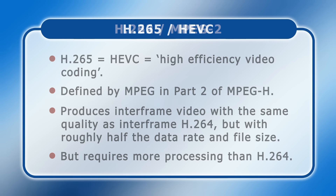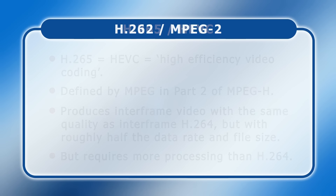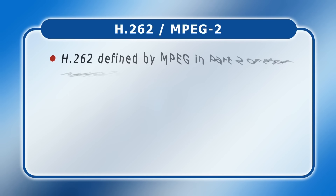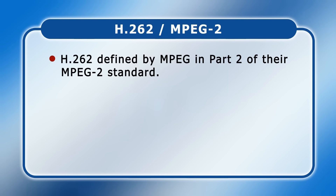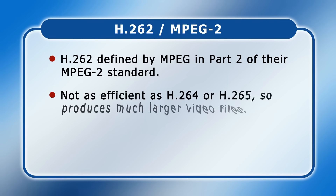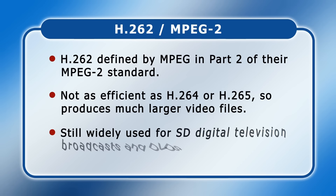An earlier and still very important inter-frame codec is H.262, which was defined by the Motion Picture Experts Group in Part 2 of their MPEG-2 standard. H.262 is not as efficient as H.264 or H.265, so it produces much larger video files. However, it is still widely used for standard-definition digital television broadcasts and DVDs.